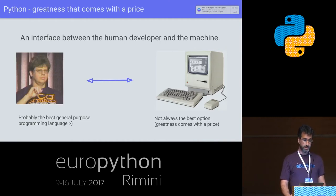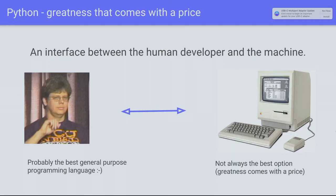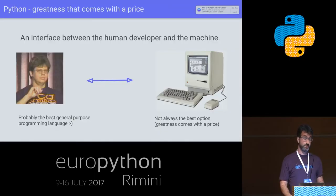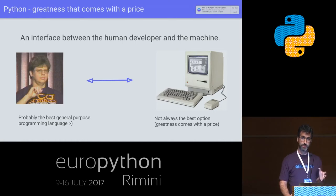When it comes to a programming language, you can see it as an interface between the human developer and the machine. For me, Python is probably the best option on the side of the human developer. I feel the cognitive load is the minimum I can have when programming. But on the machine side, Python has its limits, and most of the time we don't care — if you have a simple web app, we don't really care. But there are situations where this limit can be really problematic, and we ask ourselves: how do we use Python and still work around these limitations?